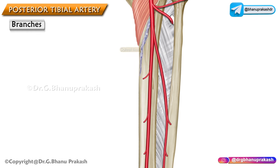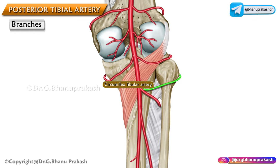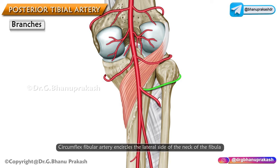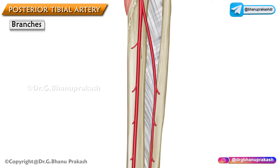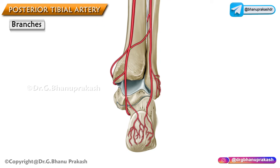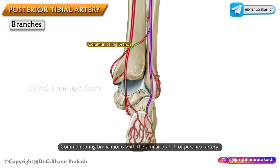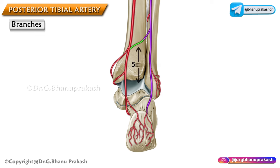Next is the circumflex fibular artery, which encircles the lateral side of the neck of the fibula. The communicating branch joins with the similar branch of the peroneal artery about 5 centimeters above the ankle.